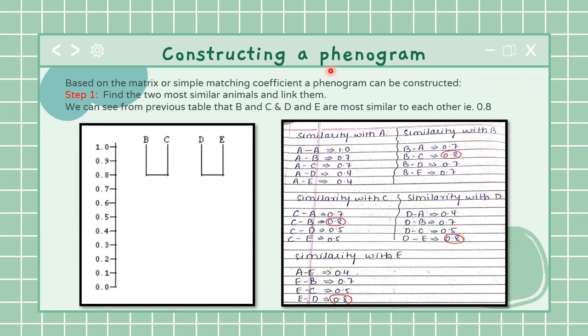Now how do we construct the phenogram? Remember the bug example we were following all this time - I will teach you how to construct a phenogram for that. It's very simple. The very first thing you have to do in your notebooks is draw this scale. I'll tell you what is the significance of the scale after some time.